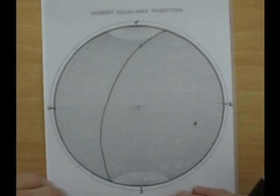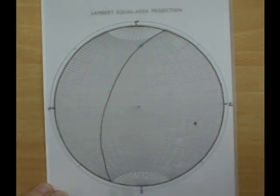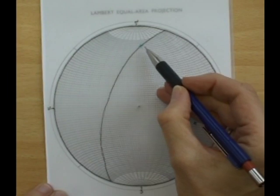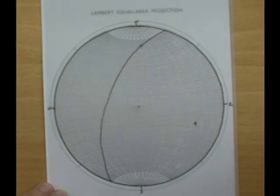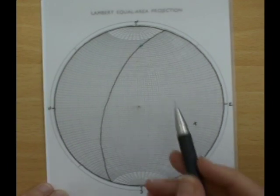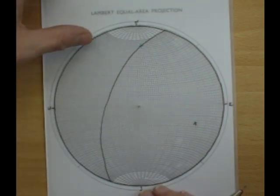Restoring paleocurrents. We have our bed plotted as a great circle here. We've got the pole to bedding and we've got our flute cast marked on here in green. What we want to do is find the original current direction of this flute cast. To do this we need to restore the bed to horizontal.